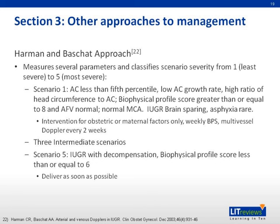We found an author who tried to use several parameters — such as abdominal circumference, growth rate, and biophysical profiling — to classify the severity of IUGR. Harmon and Bouchard used these parameters to stratify fetuses in an IUGR setting into five different gradings, each with a suggested course of action. For example, scenario 1 is the least severe and expectant management is advised, whereas scenario 5 is the most severe and delivery as soon as possible is advised. We feel that such a graduated approach to IUGR may be helpful in assisting obstetricians in their decision-making.